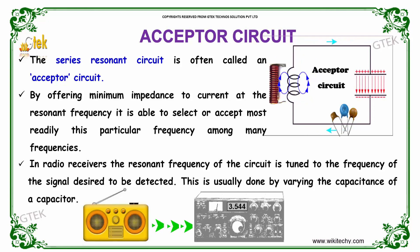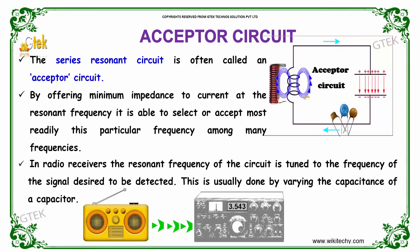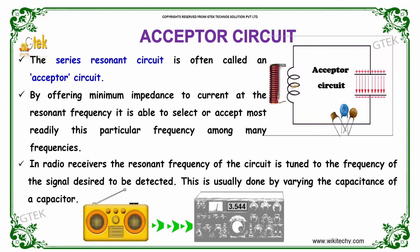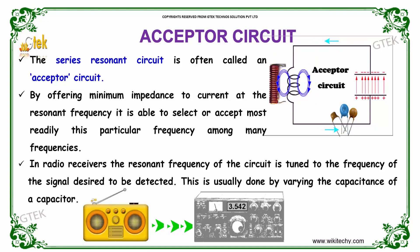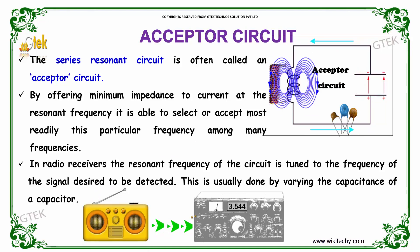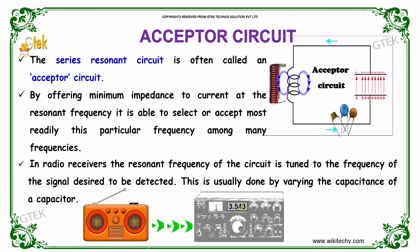The series resonant circuit is often called the acceptor circuit. By offering minimum impedance to the current at the resonant frequency, it is able to select or accept most readily a particular frequency among many frequencies. In radio receivers, the resonant frequency of the circuit is tuned to the frequency of the signal desired to be detected. This is usually done by varying the capacitance of a capacitor.